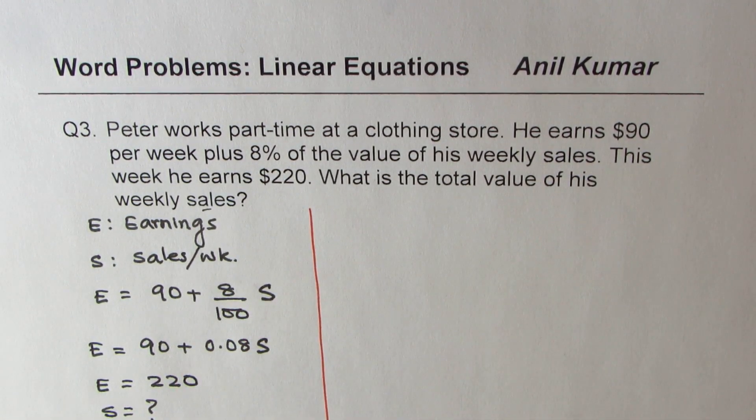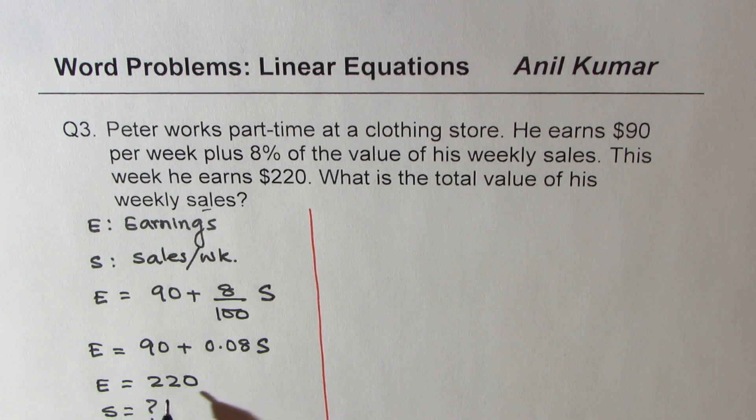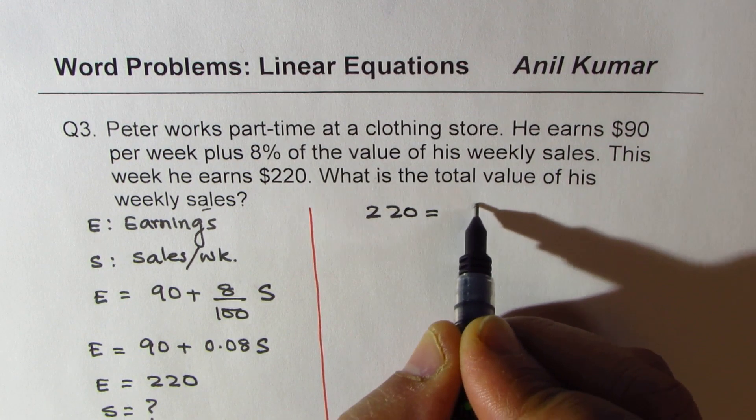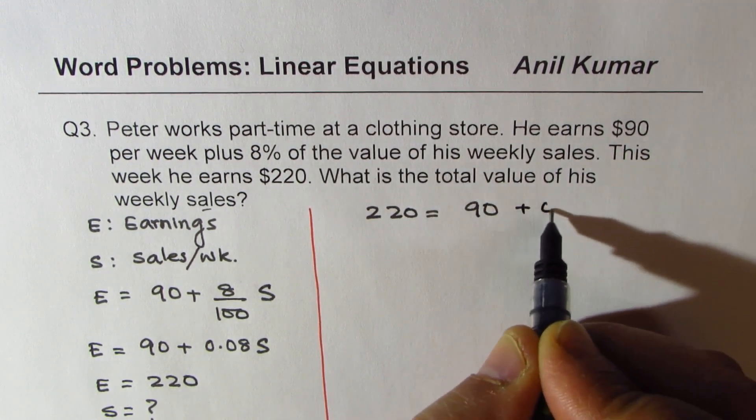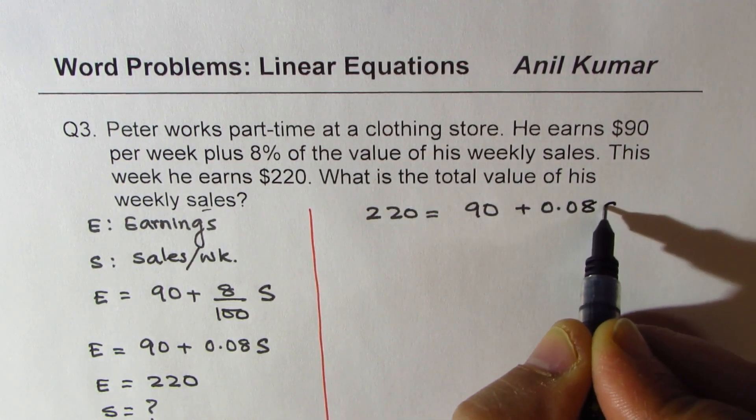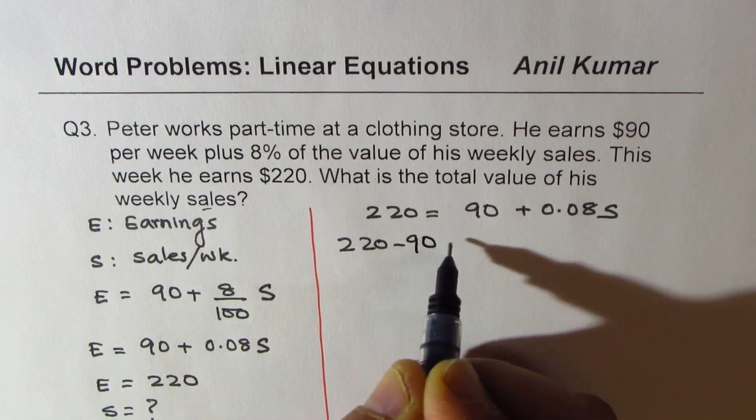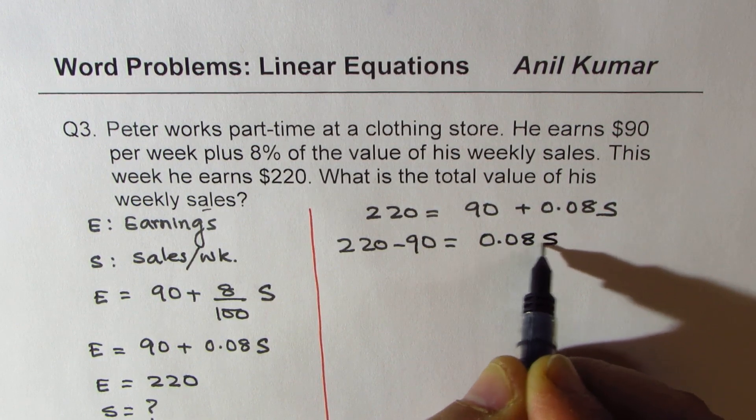If you think like this, it is very easy to solve word problems. Now we will substitute 220 for E. So we get 220 equals 90 plus 0.08S. Let's solve. 220 minus 90 equals 0.08S. So 130 equals 0.08S.